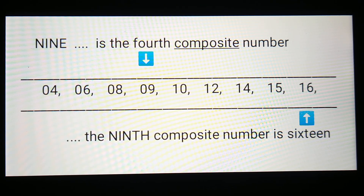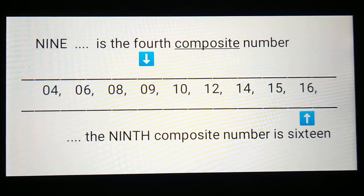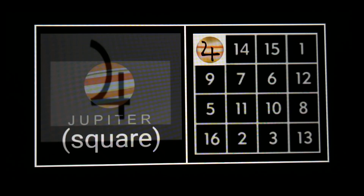First, note that 16 is four squared — meaning four times itself. And once again, the magic square of Jupiter is a four by four magic square, a total of 16 cells. You'll notice the top left number is four.